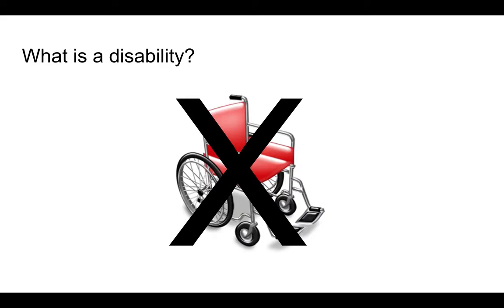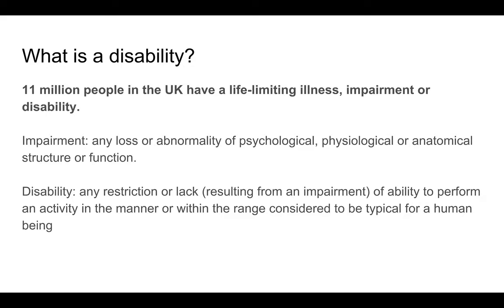Disability is very strongly linked to age. For teenagers aged 16 to 19, only 2% are recorded as having a disability, but that rises to 78% in people who are 85 and older. With an ageing population, that number is going to get bigger. In the UK, 11 million people have a life-limiting illness, impairment, or disability. An impairment means any loss of function, whereas a disability means you're unable to perform an activity outside the typical range — I use 'typical' rather than 'normal', which is a very binary medical term.